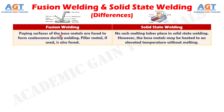Difference number one: in fusion welding, faying surfaces of the base metals are fused to form coalescence during welding. Filler metal, if used, is also fused. Whereas, no such melting takes place in solid-state welding. However, the base metals may be heated to an elevated temperature without melting.